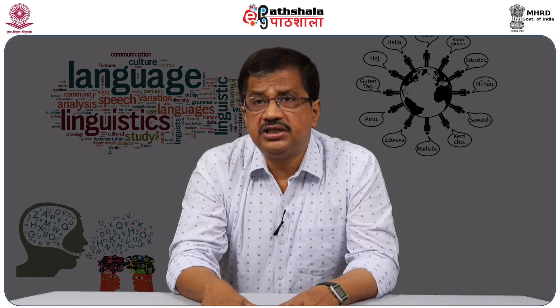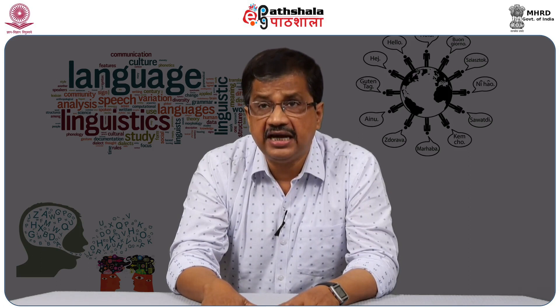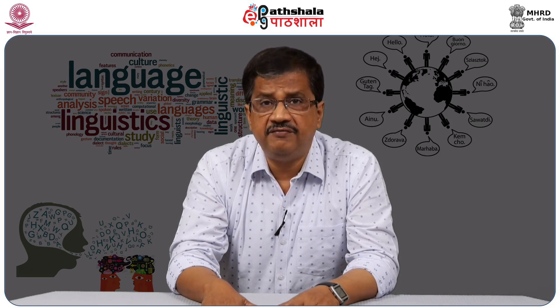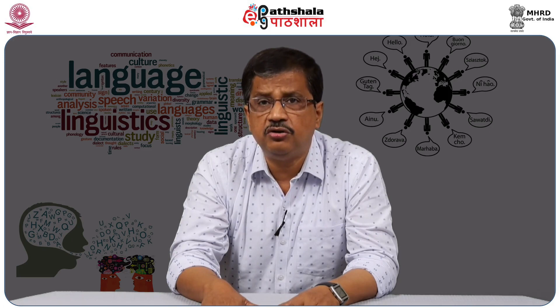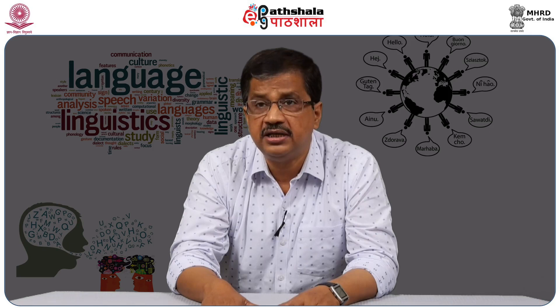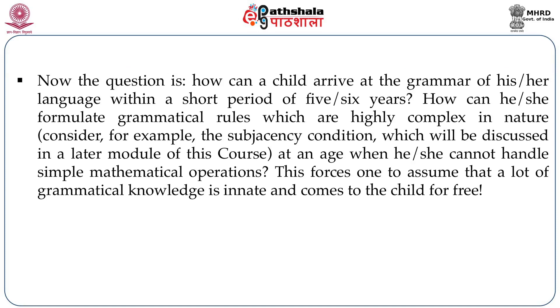We gave this example to illustrate the point that both the linguist and the child follow the same method for arriving at the grammar of a particular language. But a child arrives at the grammar of his or her language by the age of five or six. The linguist takes ages to write a grammar of a language, and when they finally do it, one always finds some new data which the grammar has failed to account for — hence the saying, 'all grammars leak.' The question is, how can a child arrive at the grammar of his or her language within a short period of five or six years — and formulate highly complex grammatical rules at an age when he or she cannot handle simple mathematical operations? This forces us to assume that a lot of grammatical knowledge is innate and comes to the child for free.